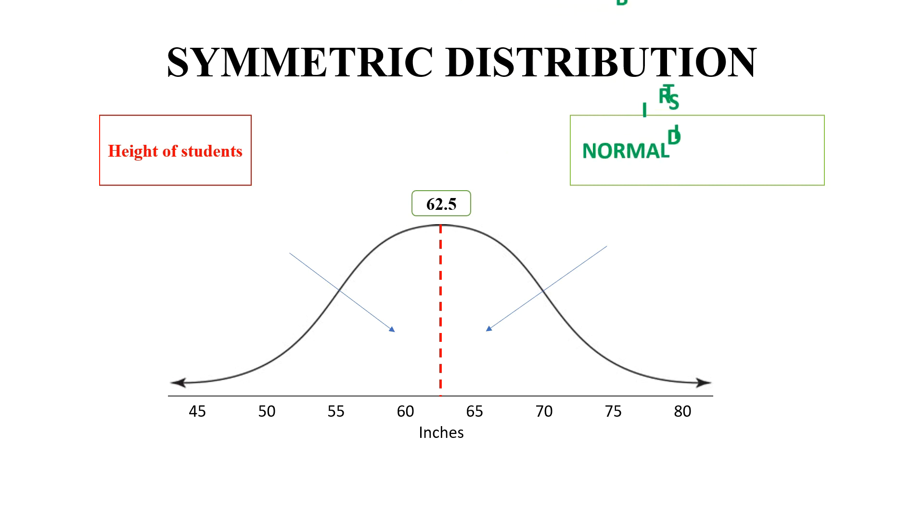This type of distribution is called normal distribution and the data is distributed equally on both sides of the central value. It is also known as a bell curve.